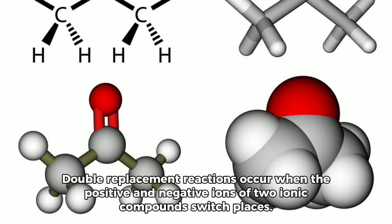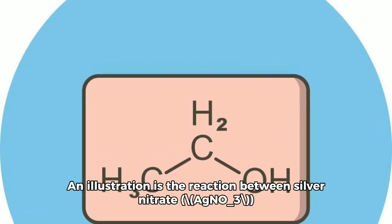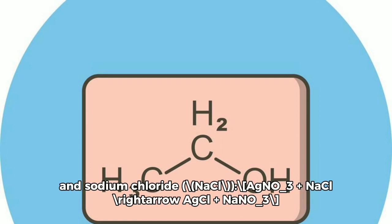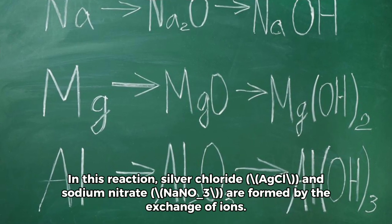Double replacement reactions occur when the positive and negative ions of two ionic compounds switch places. An illustration is the reaction between silver nitrate (AgNO₃) and sodium chloride (NaCl): AgNO₃ + NaCl → AgCl + NaNO₃. In this reaction, silver chloride (AgCl) and sodium nitrate (NaNO₃) are formed by the exchange of ions.